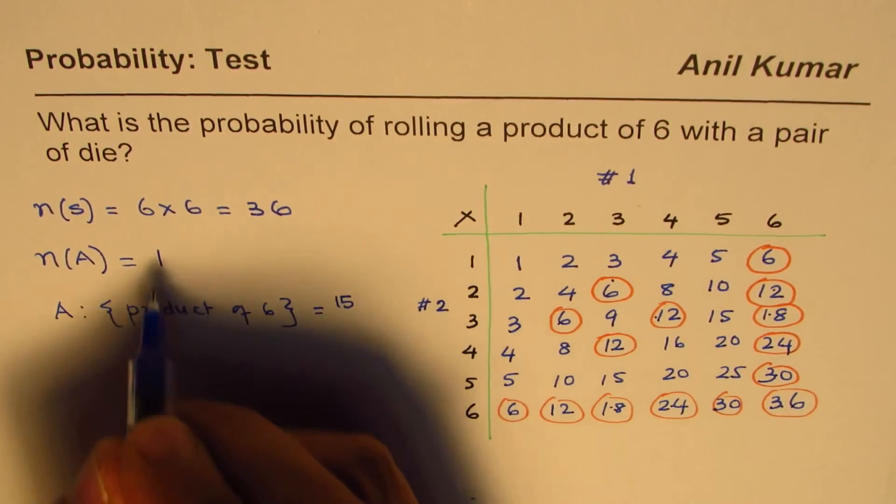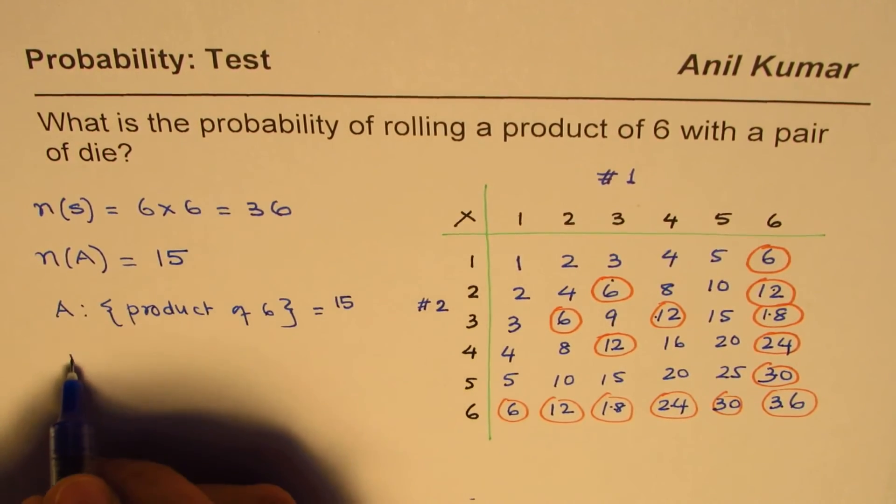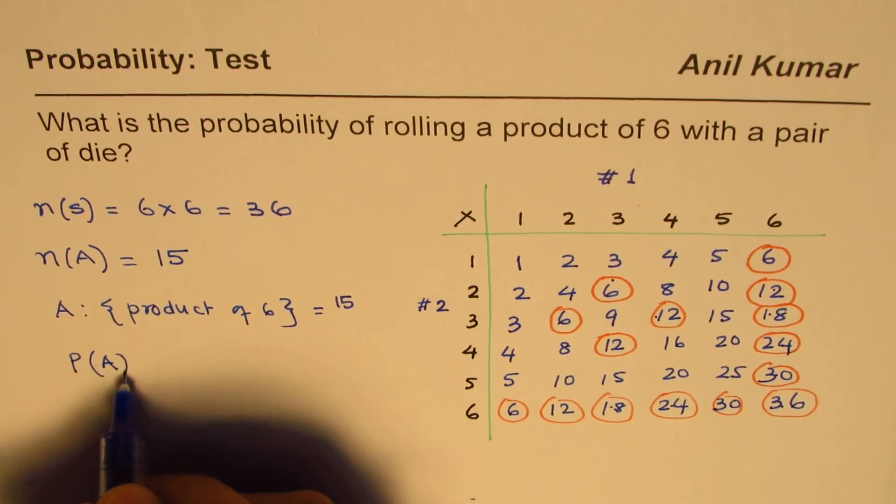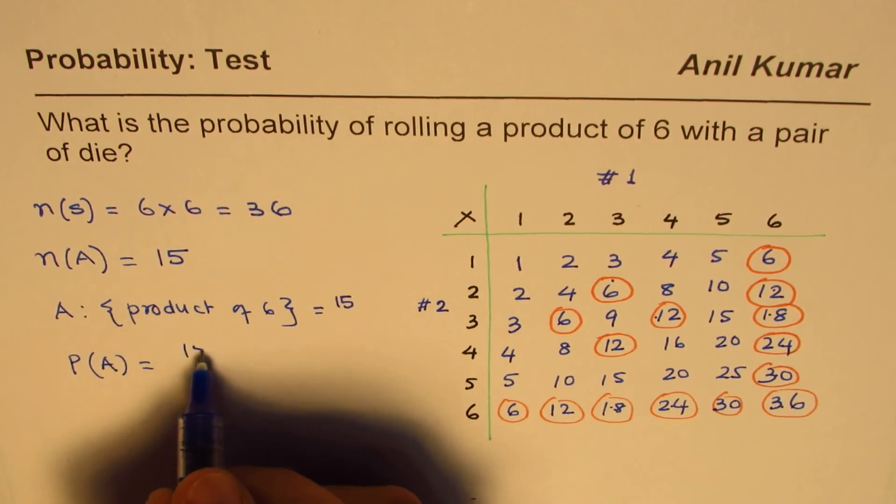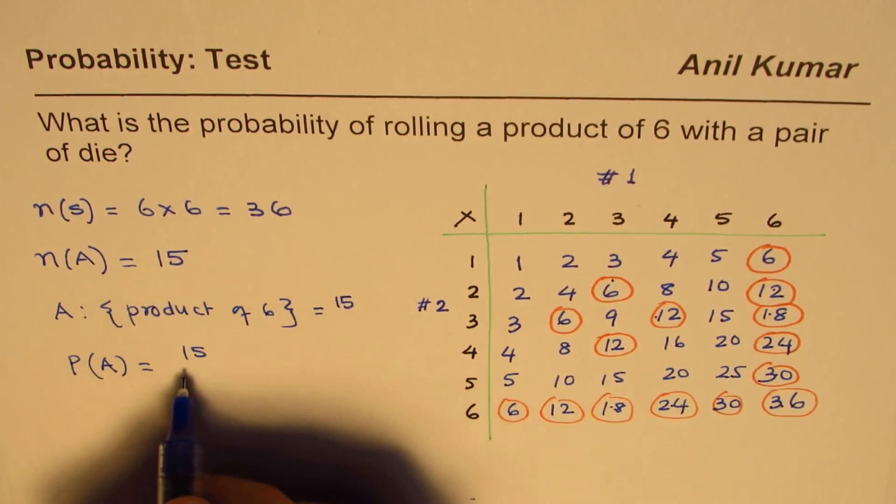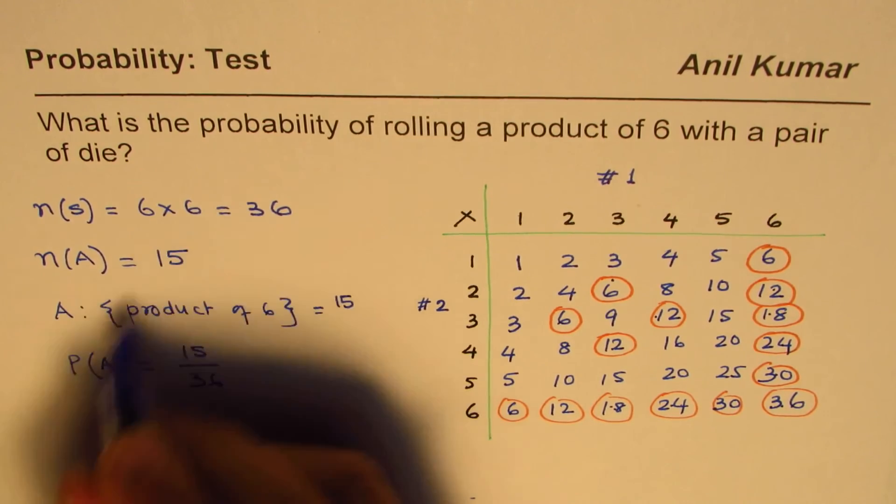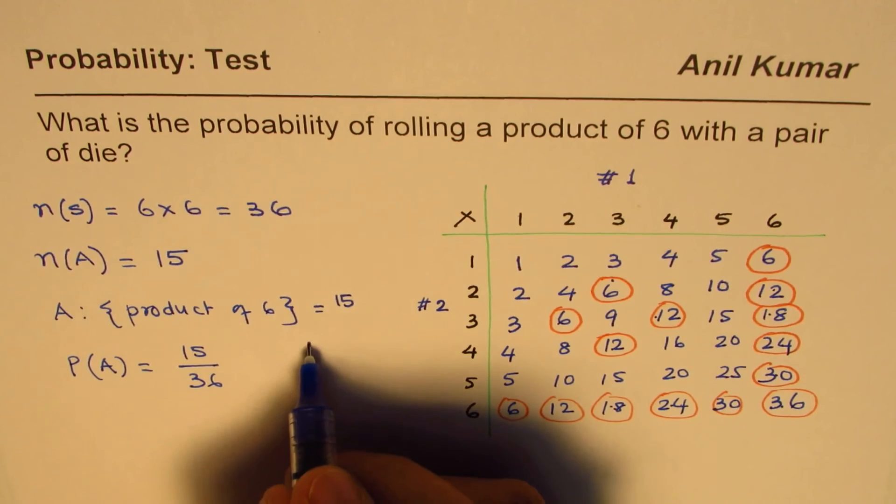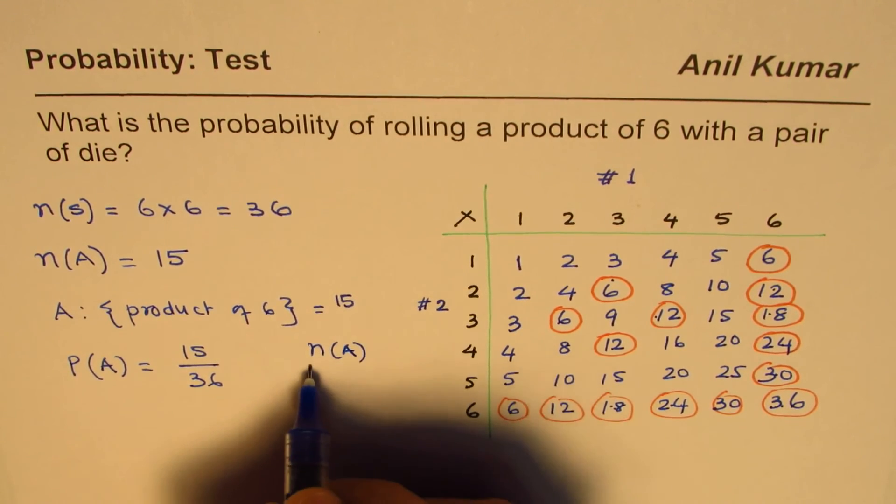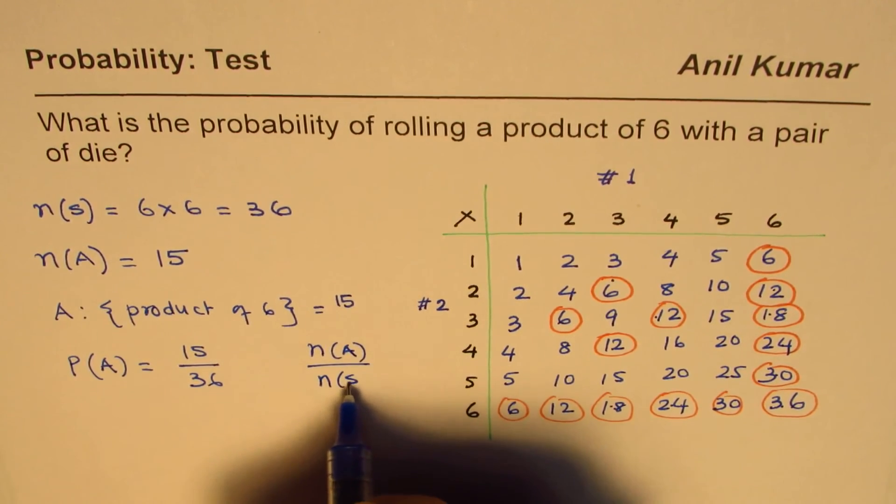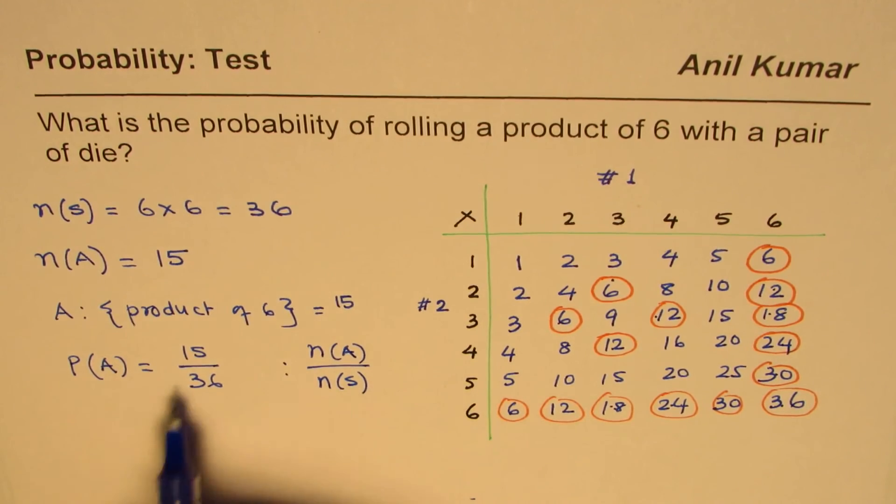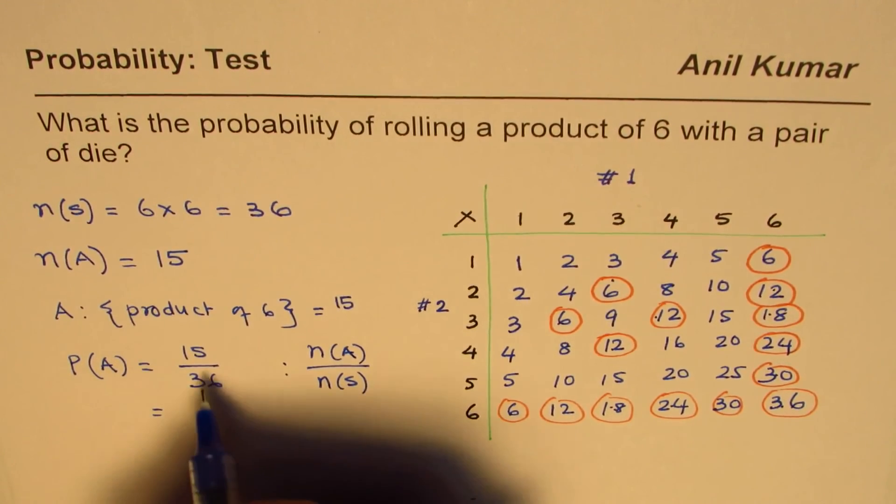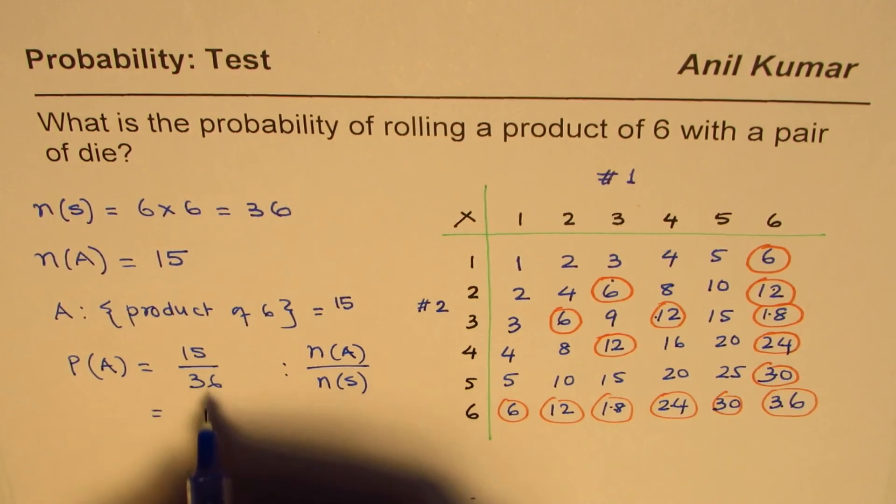So we know n(A) is 15. The probability of A—that is, to get the product—is 15 over 36. So it's the ratio of these two. That is to say, what we did here to find the probability is favorable outcomes over total in the sample space.